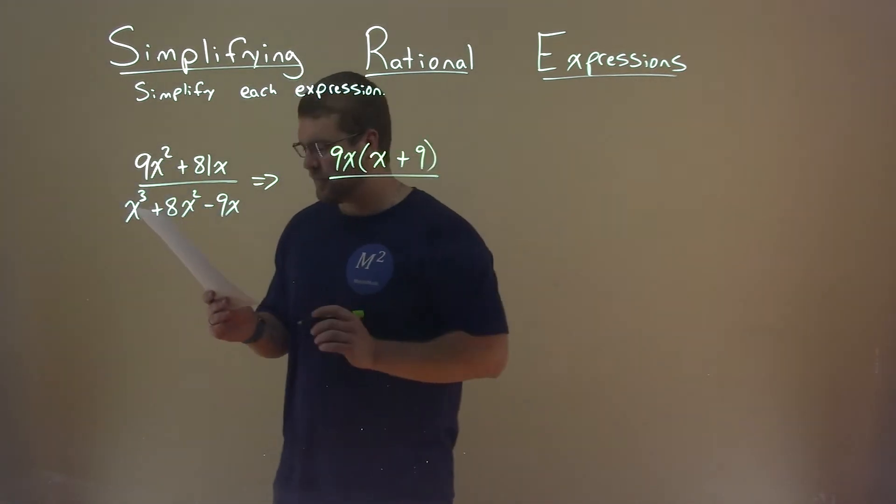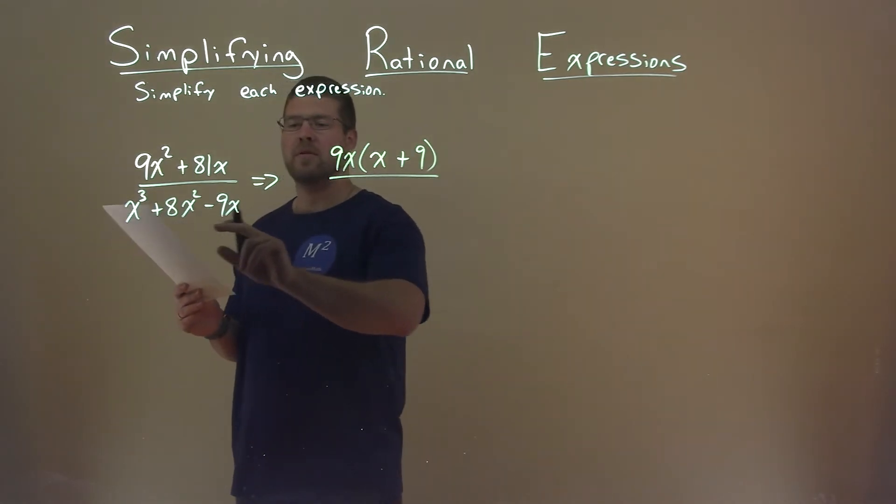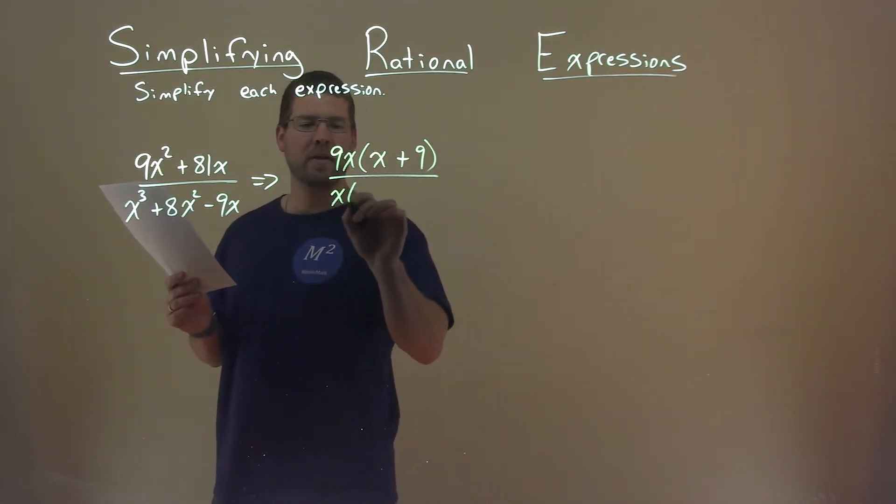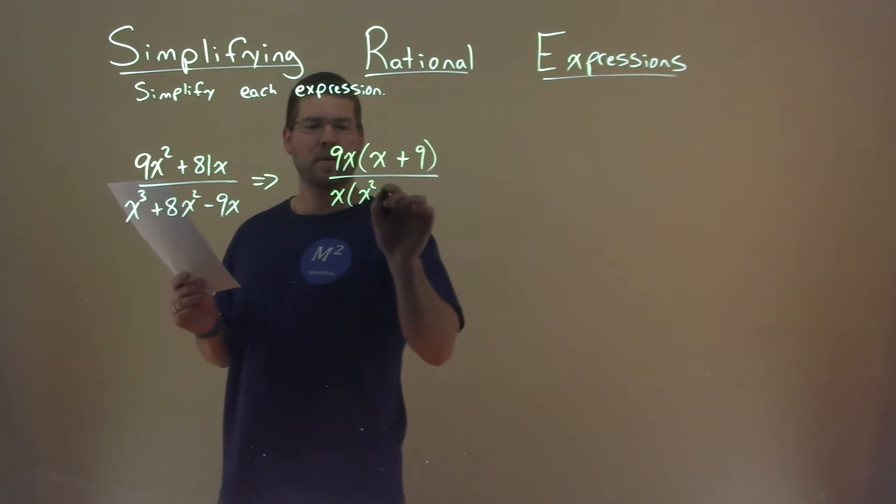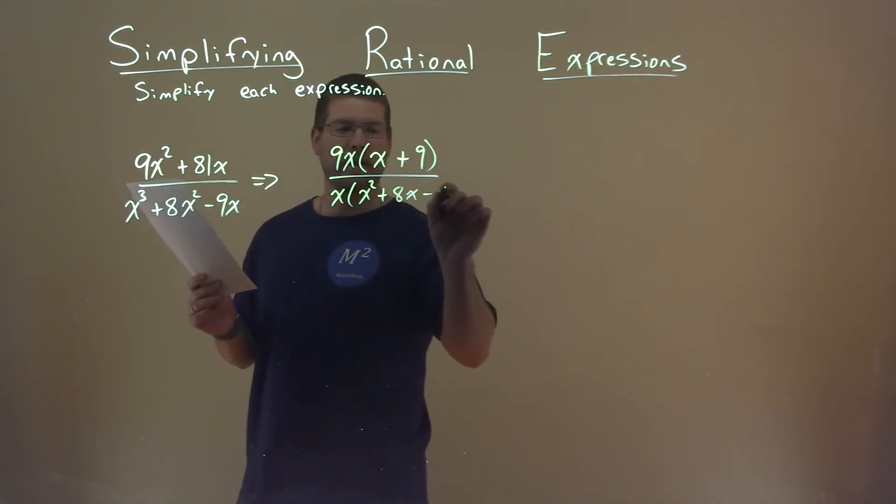Now the denominator. An x is in all parts, so let's pull that out. We pull out an x, and we're left with x squared plus 8x minus 9.